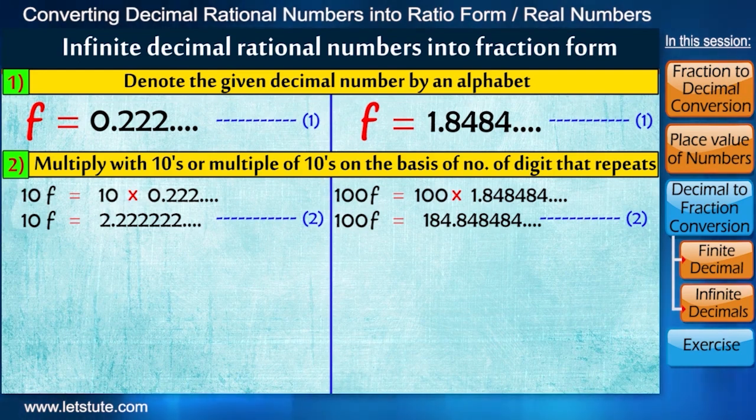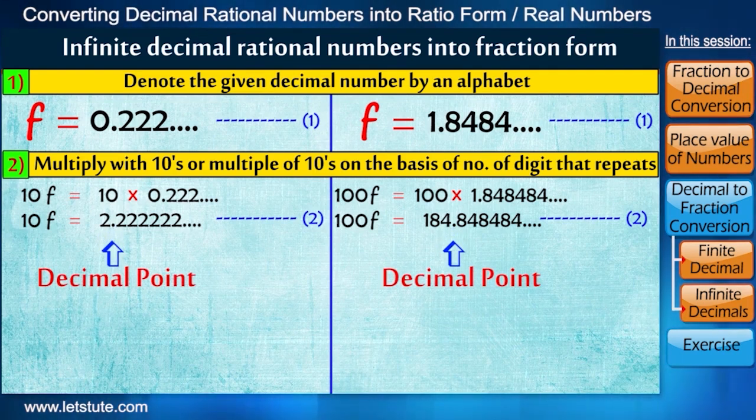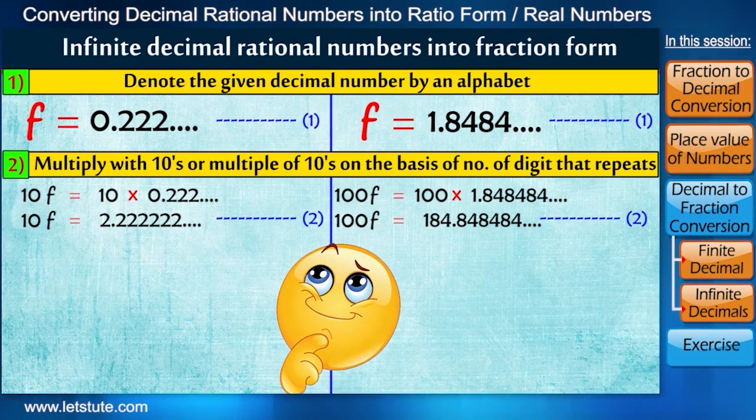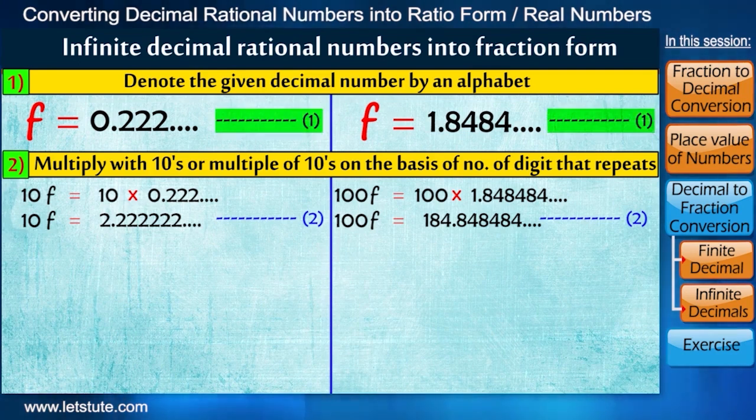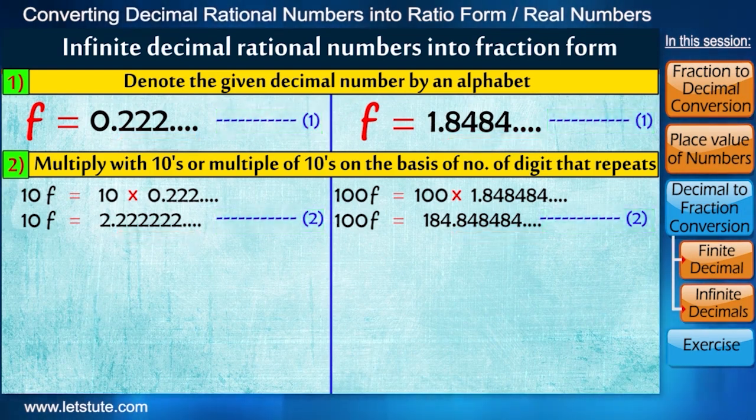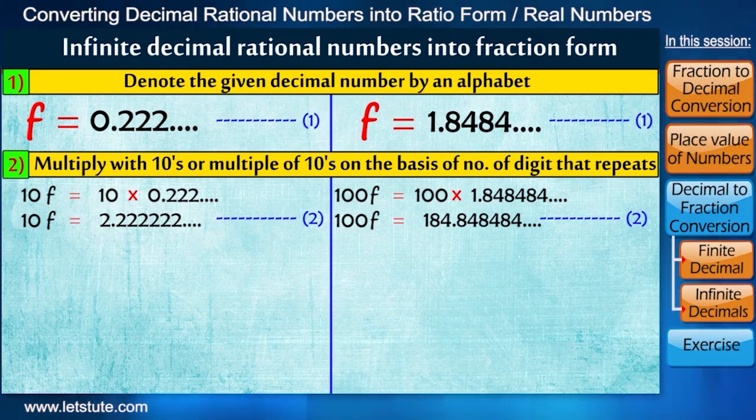Now as we did in the case of finite decimals, here too, we have to get rid of this decimal point. And that can be done only when all the digits after decimal are 0, right? So can you guess how can we do this? We can see in equation 1 and 2, after decimal, all the digits are same.